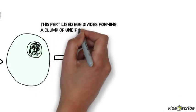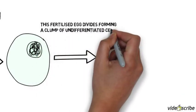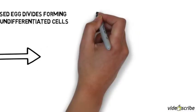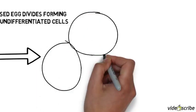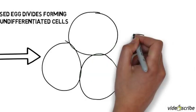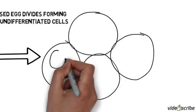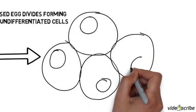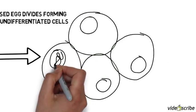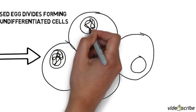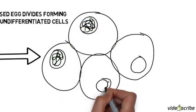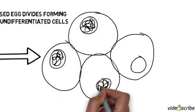Later on, the cells will be differentiated and form lots of different types of cells. Differentiated cells can only turn into copies of themselves. So a muscle cell can only make more muscle cells, and a nerve cell can only make more nerve cells.